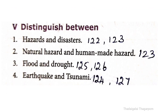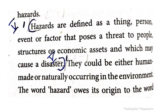Next, Roman No. 5: Distinguish between. First - hazards and disasters. The answer is on pages 122 and 123. Hazards are defined as a thing, person, event or factor that possesses a threat to people, structures, or economic assets, and which may cause a disaster.